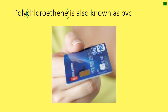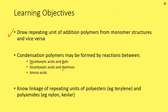That's pretty much all we need to know about addition polymers, but you might be interested to see a real addition polymer. Polychloroethene — also known as PVC — is an addition polymer, and you can see it written with brackets or without brackets, but it's the same thing. Here's a picture of something made out of PVC: a credit card. Moving on to our learning objectives, we've drawn repeating units of polymers and gone both ways, so we can tick off our first learning objective and move on now to condensation polymers.